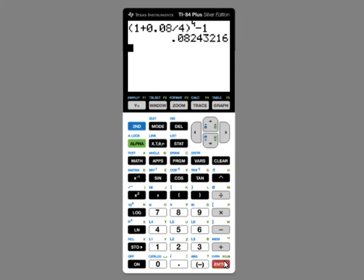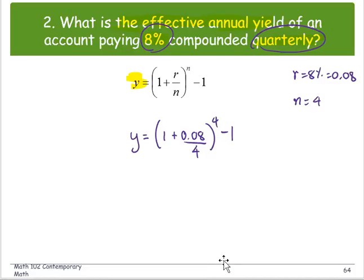So we get the yield as 0.08243216. So right down here, the 0.08243216, we call the yield, which is the simple rate, or the simple interest rate.